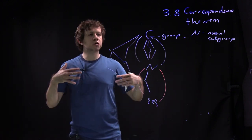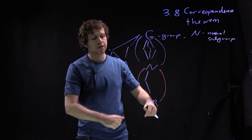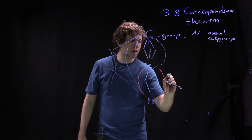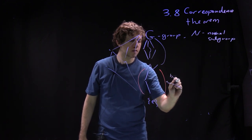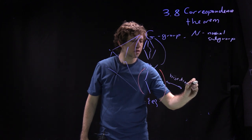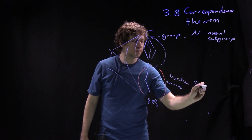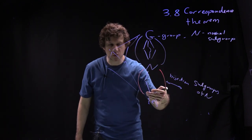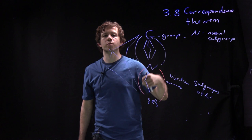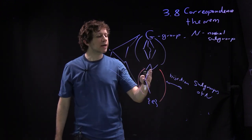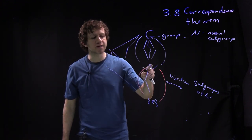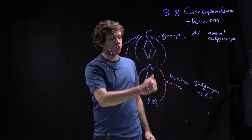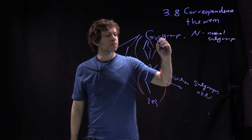Suppose I want to understand what the subgroups below N look like — these are subgroups of N. These guys are of course in bijection with just subgroups of N, and this is not surprising. They are after all subgroups of N, and any subgroup of N will also be a subgroup of G. So understanding subgroups of G contained inside N is really easy — these are just subgroups of N. And of course you don't need N to be normal here.